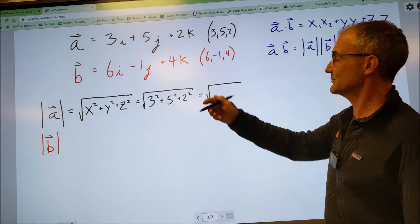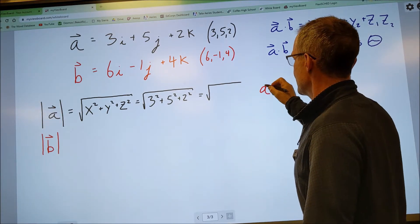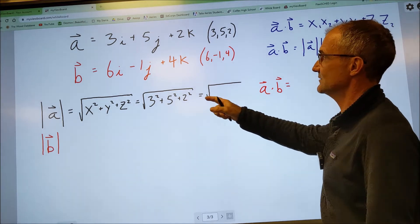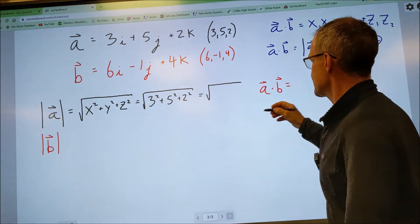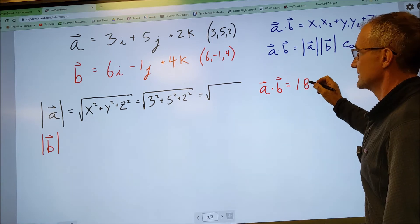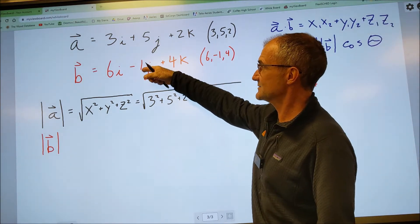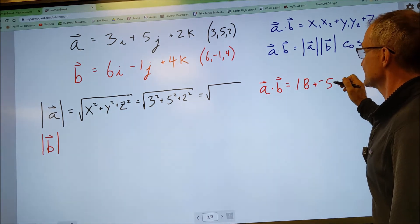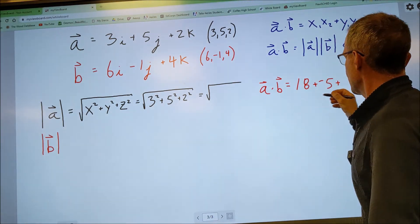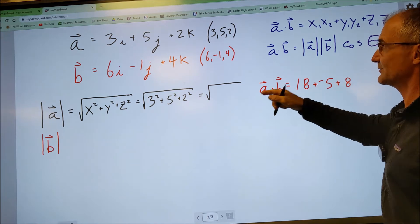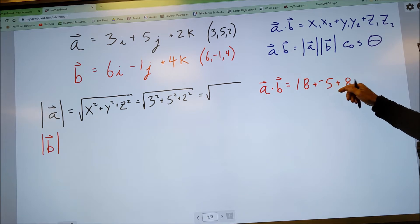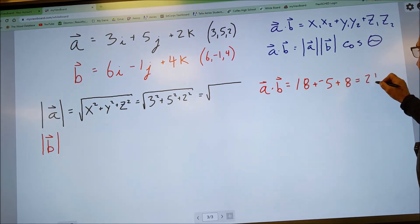So if I want to find the dot product between A and B, I could do A dot B is going to be equal to 3 times 6, 18, plus 5 times negative 1, negative 5, plus 2 times 4, 8. So the dot product A dot B is going to be equal to 26 minus 5, 21. That's how easy it is to find the dot product.